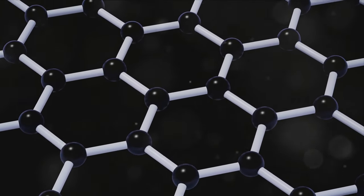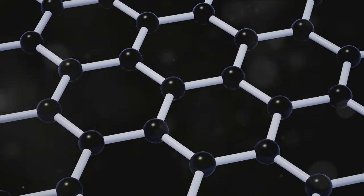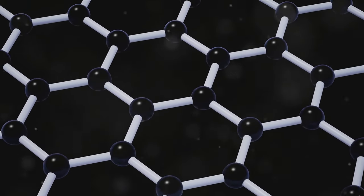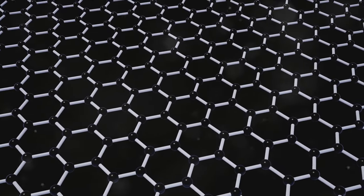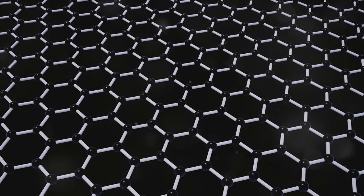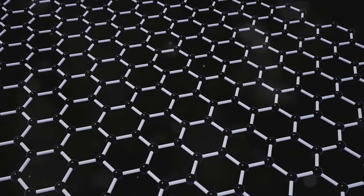Graphene is renowned for its unique properties. It's incredibly light, yet its strength surpasses that of steel. It's an excellent conductor of heat, and most importantly for our discussion, of electricity. These characteristics alone make graphene a promising candidate for a multitude of applications, from flexible electronics to high-speed computing.